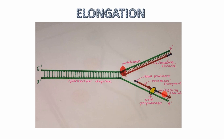In order to add the dNTPs, DNA polymerase needs a 3' hydroxyl group. That 3' hydroxyl group is created by an RNA primer. This primer is made up of RNA, and RNA polymerase synthesizes this RNA primer, which provides the free 3' hydroxyl end for DNA polymerase. The lagging strand is lagging because the direction of DNA polymerase is reversed, and it needs many RNA primers to synthesize the new DNA strand.